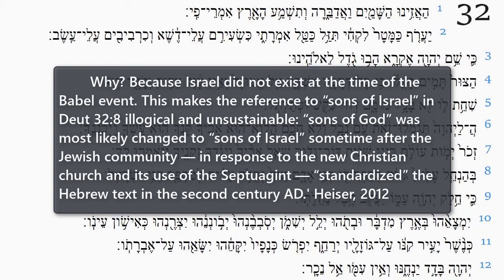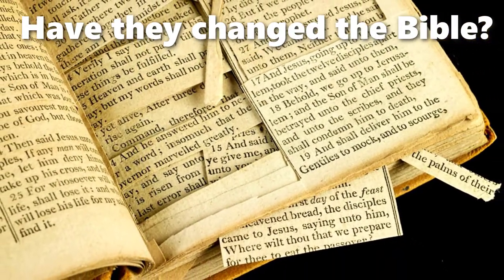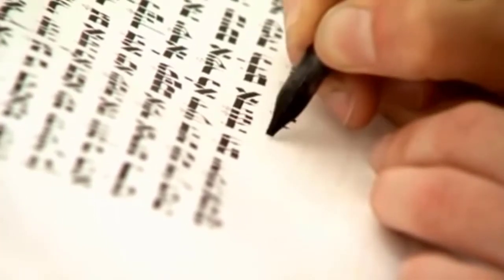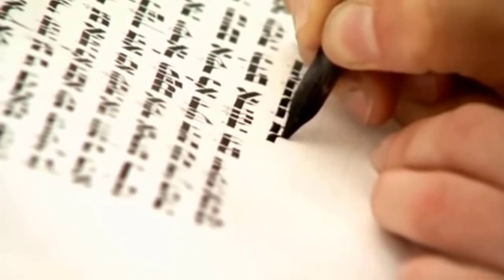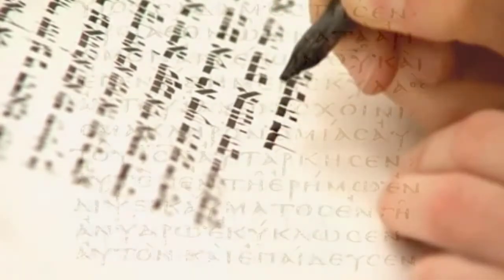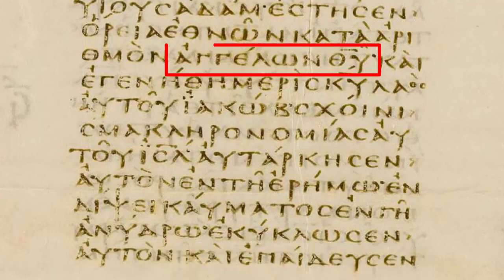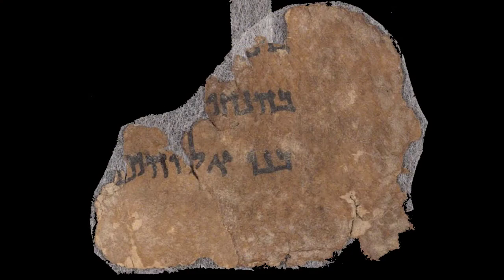'Sons of God' was most likely changed to 'Sons of Israel' sometime after the Jewish community, in response to the new Christian Church and its use of the Septuagint, standardized the Hebrew text in the 2nd century AD. So, has the scripture been changed? Well, yes and no. Yes — scribes sometimes, though rarely, altered a text for reasons they believed to be good ones. In this case, they desired to defend monotheism, even though doing so introduced an anachronism. No — for the earlier wording of the text has been preserved, both in translations and in older copies of the original text. In this case, the earlier form was always available in Greek and has been recovered in Hebrew at Qumran.